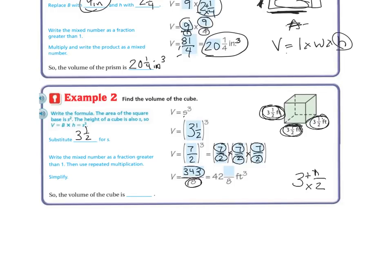And 8 can go into 343, 42 times, so 42 whole. And I'm going to have 7 left over. So my cube is going to be, volume is going to be 42 and 7/8 feet cubed.